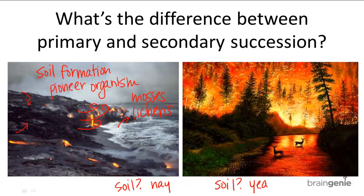Secondary ecological succession can occur after a small forest fire or after a logging company clears a piece of land. So this doesn't exactly look like a small forest fire, but let's pretend it is. When the fire burns down the trees, it still keeps the soil intact, so it doesn't have to go through all the processes that primary succession does for soil formation.